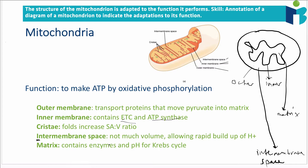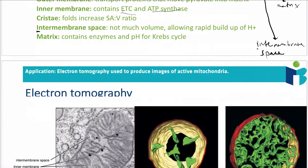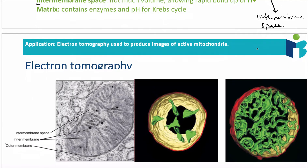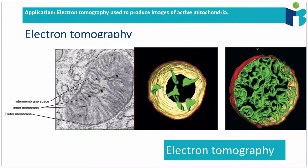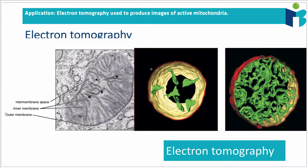Finally, the matrix contains all the enzymes and the ideal pH necessary for both the Krebs cycle and the link reaction. If we were to look at a mitochondrion using electron tomography — which is basically where you produce a 3D image from a small structure —